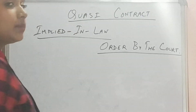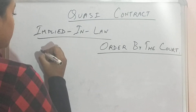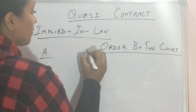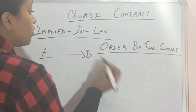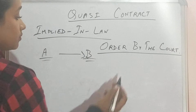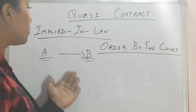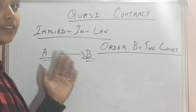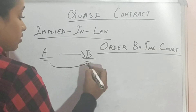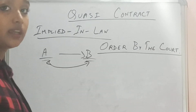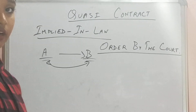So it basically means, for example — there is Party A and Party B. So they are in some terms of business, but they don't have a particular agreement. So if there is any dispute between A and B and they don't have any proper agreement to back it up, so what can be done regarding that?